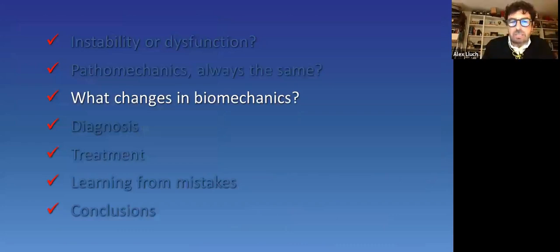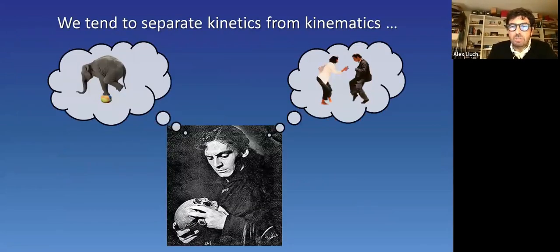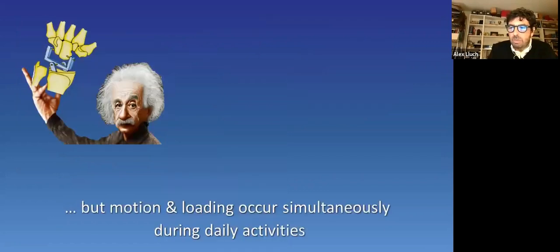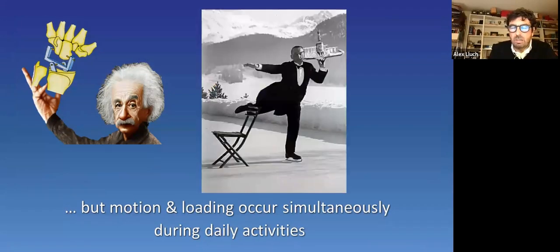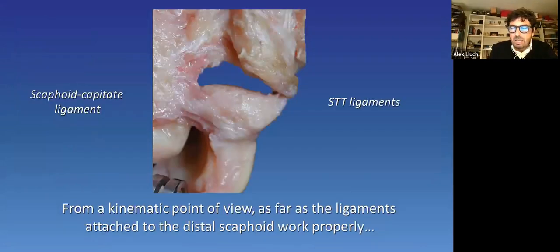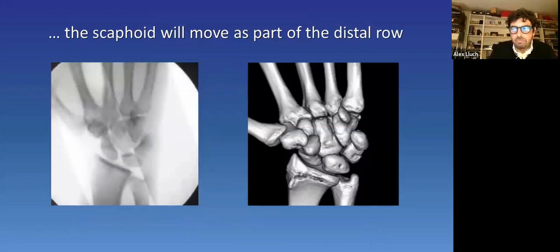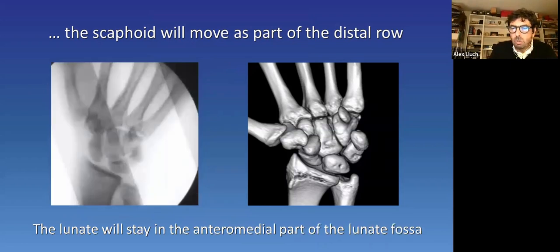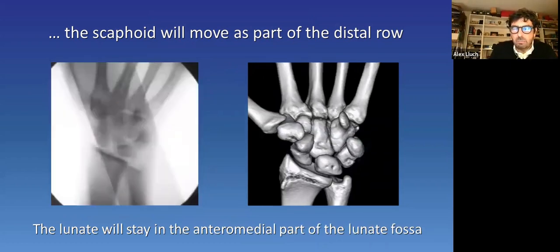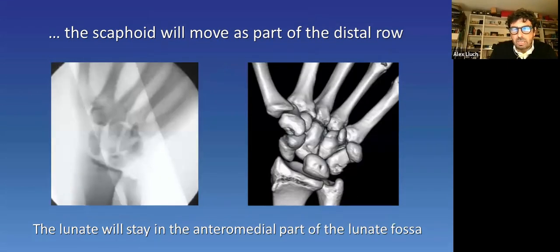Which are the biomechanical changes expected in scapholunate dysfunction? Well, let's start saying that artificially we tend to separate kinetics from kinematics. And we do that because it's easier to understand. But motion and loading occur simultaneously during daily living activities. In scapholunate instability, from a kinematic point of view, as far as the ligaments attached to the distal scaphoid work properly, that means STT and scaphocapitate ligament, the scaphoid will move as part of the distal row. The lunate, on the contrary, will move less and stay in the anterior medial part of the lunate fossa, as you see in the video on the right side.